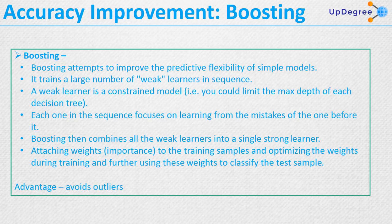Boosting attempts to improve the predictive flexibility of simple models. The models in boosting are slightly simple — they are weak learners, which are constrained models. For example, constraints may include the maximum depth of each decision tree and the splitting criteria. It trains a large number of weak learners in sequence.